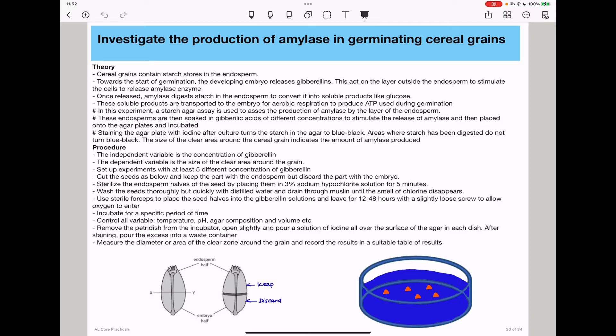We use a starch agar assay. We cut the seed in the XY direction, discard the embryo, and keep the endosperm. This allows us to control the concentration of gibberellin that the endosperm is exposed to, determining which concentration releases the highest amount of amylase. The endosperms are soaked in gibberellic acid of different concentrations to stimulate amylase release, then placed onto agar plates during incubation.